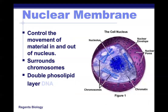Surrounding the nucleus is the nuclear membrane, a phospholipid membrane that controls what can move in and out of the nucleus. It is there to protect the DNA from damage and to control what can get inside to the DNA.